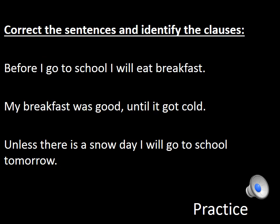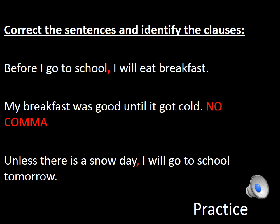On this slide, I'd like you to pause the video and practice identifying errors in comma placement between independent and dependent clauses. In the first example, you should have put a comma between 'school' and 'I' — 'Before I go to school' is the dependent clause coming before the independent clause 'I will eat breakfast.' In the second example, remove the comma between 'good' and 'until' — 'My breakfast was good' is the independent clause, and 'until it got cold' is the dependent clause coming after, so no comma is needed. In the last example, 'unless there is a snow day' is the dependent clause coming before the independent clause 'I will go to school tomorrow,' so a comma belongs between 'day' and 'I.'